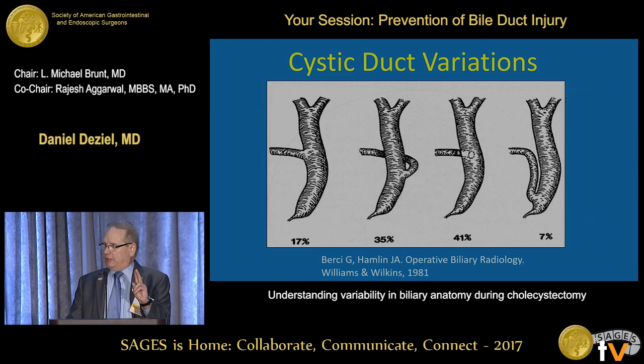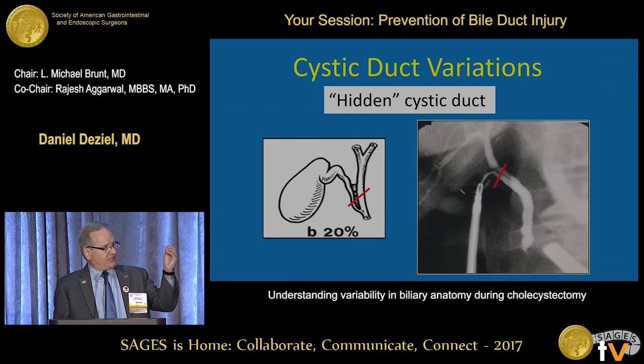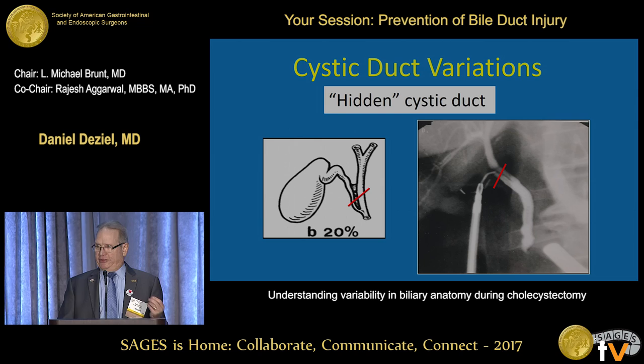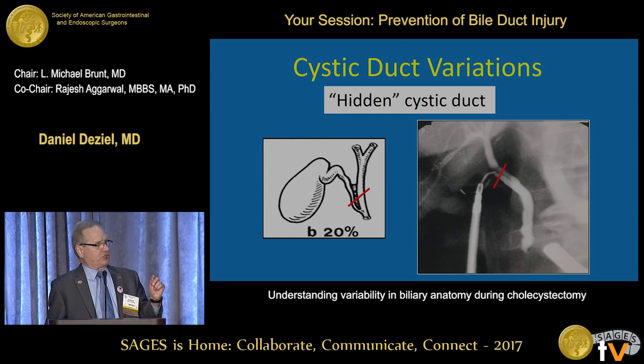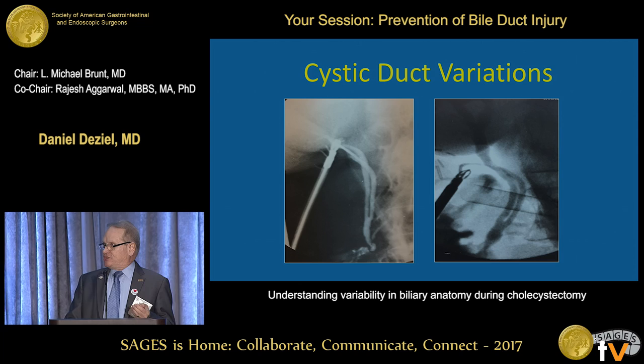There are two variations in the cystic duct that are particularly dangerous for duct injury. The first is when the cystic duct is fused to the common duct for a variable distance — this is called the hidden cystic duct. This can occur natively because the two can share a common fibrous sheath, but commonly this is the result of inflammatory fusion.